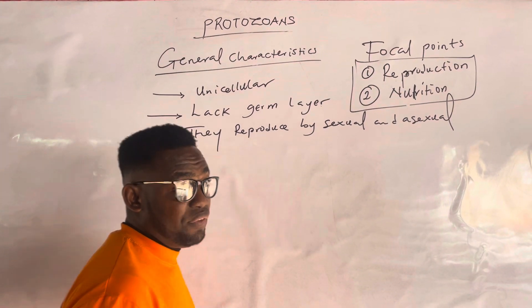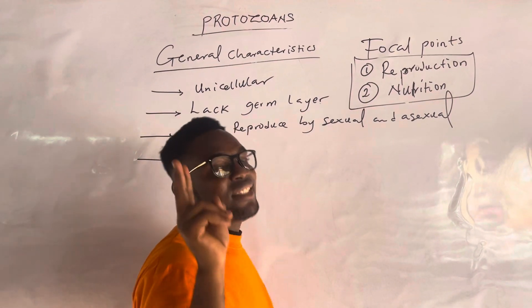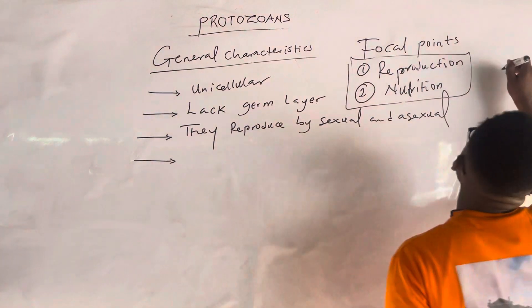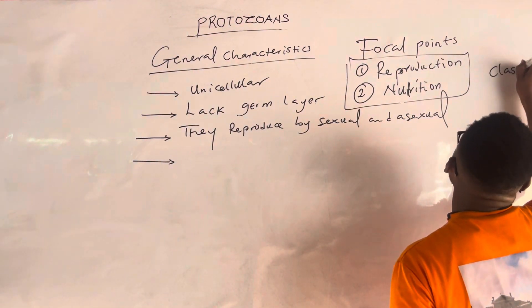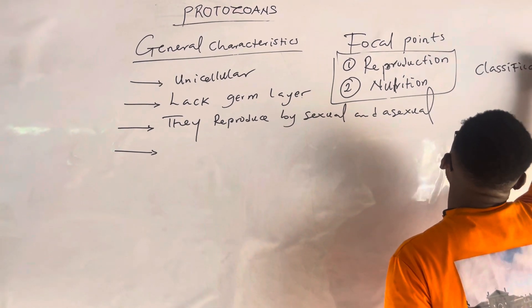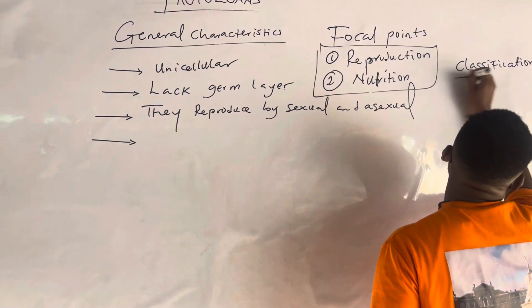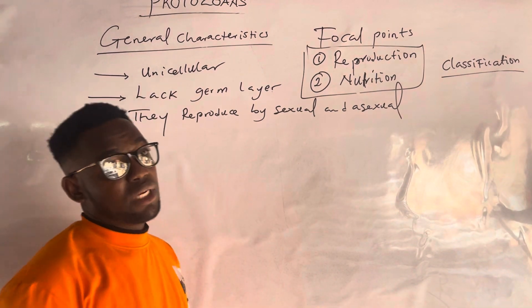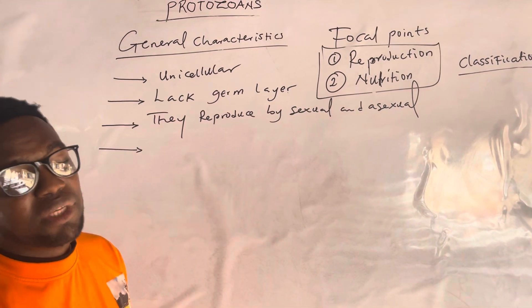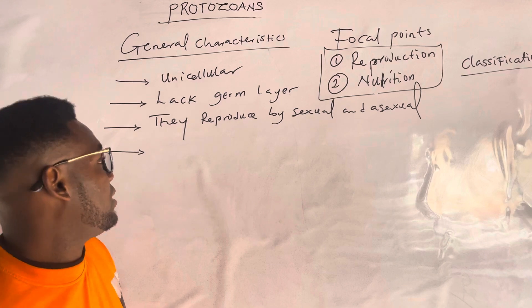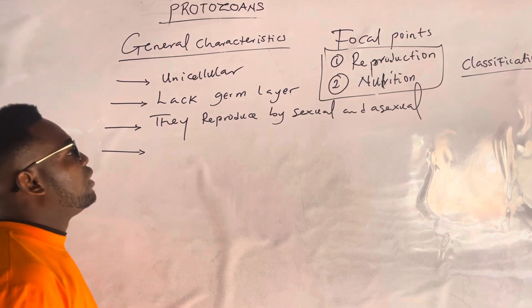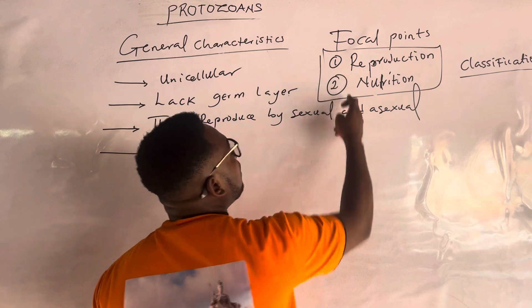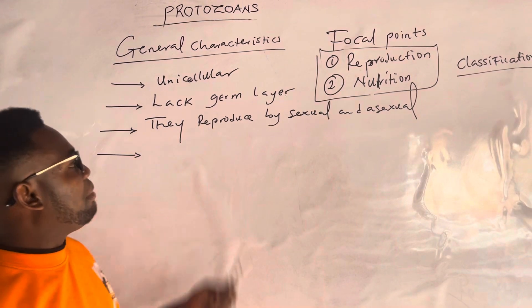The first thing you need to look out for is general characteristics. The second thing you need to look out for is classification — how is this organism classified? After classification, you can look out for examples and their economic importance. So for focal points, you can use these two focal points to even remember them.